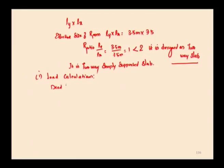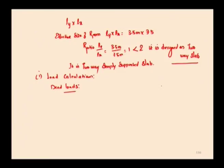First, we consider dead loads, which consist of the self-weight of the structure and the weight of the floor finish. Since there are no partition walls inside this 3.5 m by 3.5 m room, we consider only the self-weight and floor finish as dead load. To find the self-weight, we first assume the thickness of the slab based on deflection criteria. For a simply supported slab, the L/D ratio equals 20.